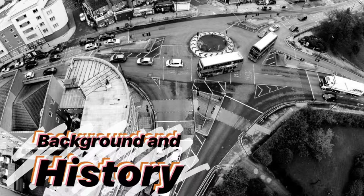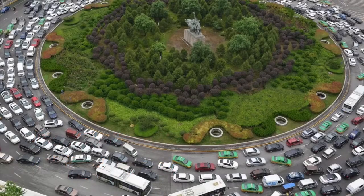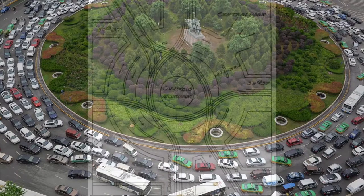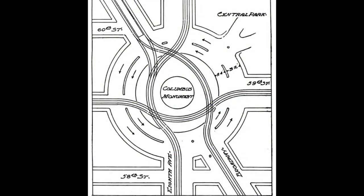One problem with non-conforming traffic circles was that they would often be the cause of traffic jams. This is due to many things, including the right-of-way being given to entering vehicles, entryways being regulated by stop signs or stop lights, and as we see in the Columbus Circle in New York City, three roads would cut through the center of the circle.